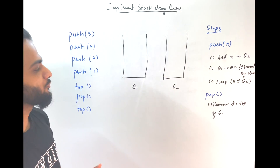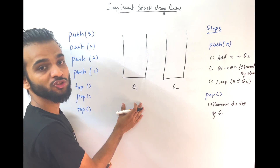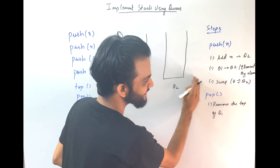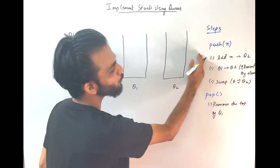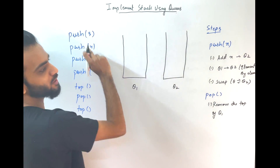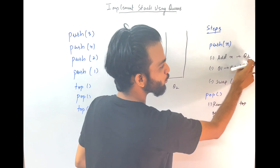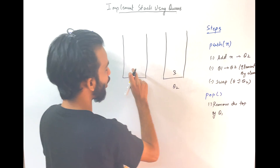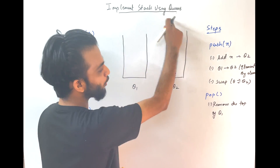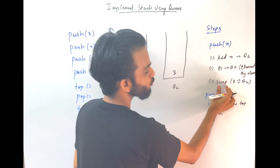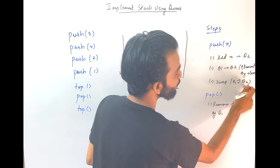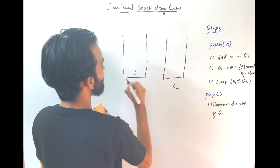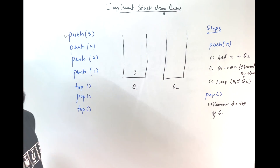In order to implement the stack, we will be requiring a couple of queues: Q1 and Q2. Whenever there is an operation push of 3, you follow these steps. Add x to Q2 — so add 3 to Q2. Now move all elements of Q1 to Q2, but I don't have anything in Q1, so nothing will go. Then swap Q1 and Q2. So all the elements come over here. Push of 3 is done.